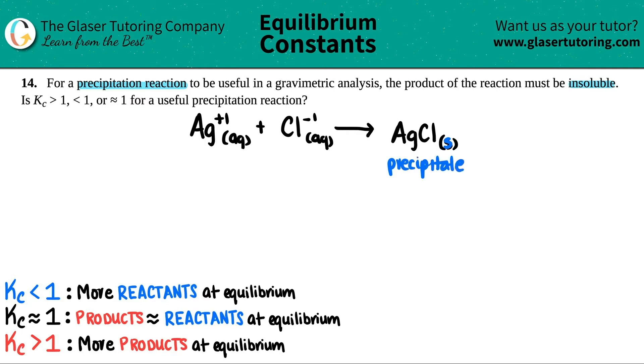Okay. Now, in order for a precipitation reaction to be useful, the product has to be insoluble. Once you make that compound, do you think that it's going to want to break down into its ions? No. That's what insoluble means.